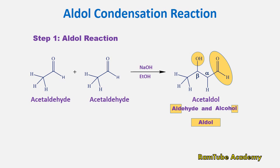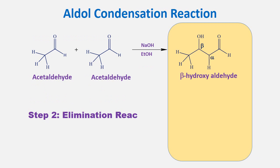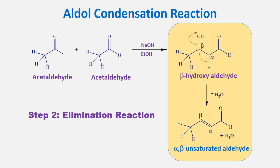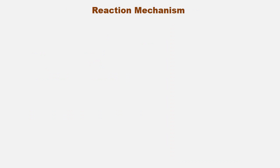Step 2 — Elimination Reaction: this starts with the product of the aldol reaction, that is beta hydroxy aldehyde. From this molecule, hydrogen from the alpha carbon and the hydroxy group from the beta carbon are eliminated in the form of water, forming the product alpha-beta unsaturated aldehyde. Because water is removed during the reaction, this step is also known as a dehydration reaction.